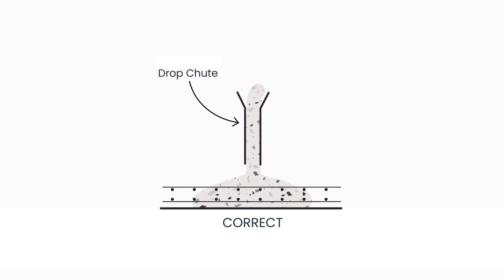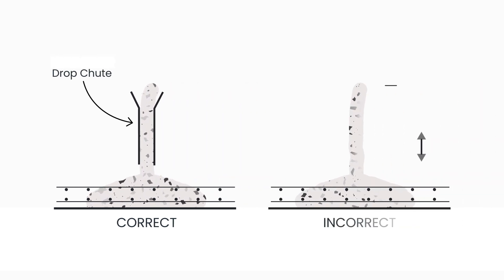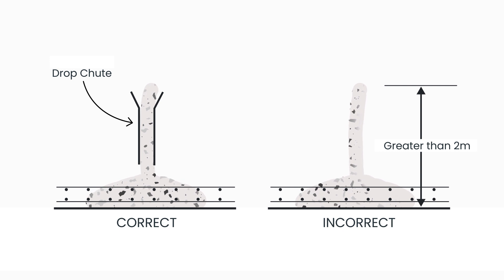Use a drop chute if concrete has to fall more than 2 metres. Allowing concrete to free fall more than 2 metres can displace reinforcement, damage formwork and cause concrete to segregate.